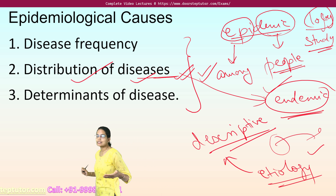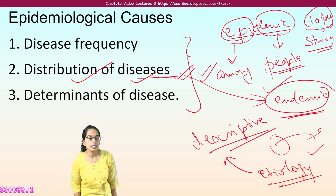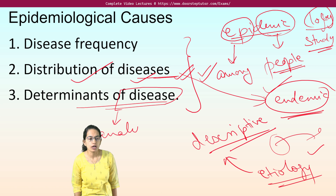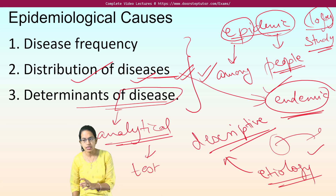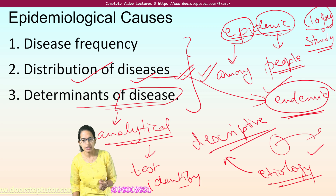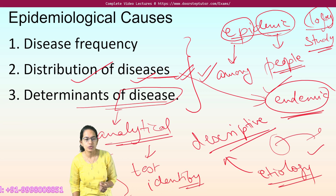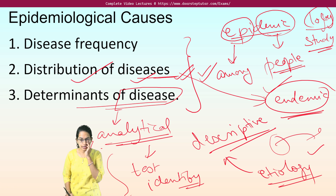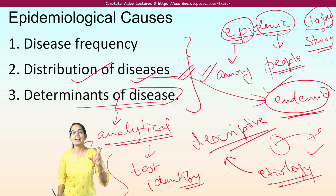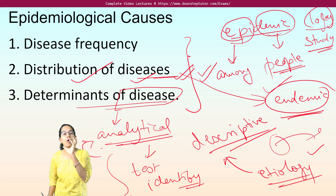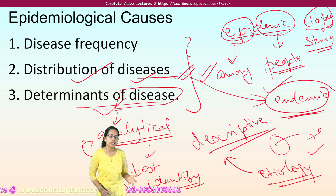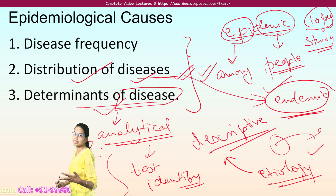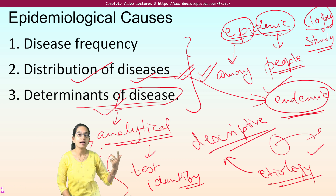Under determinants of disease, we focus on analytical epidemiology. Here, certain factors are used to test the etiology and identify the risk factors associated with it. Analytical factors help us establish health programs, interventions, and policy guidelines. Once we understand the determinants, it becomes easier to bring in programs for prevention and mitigation.